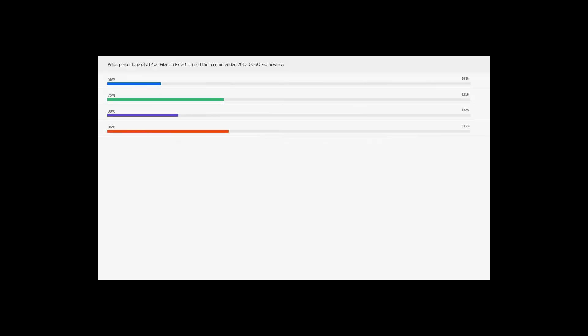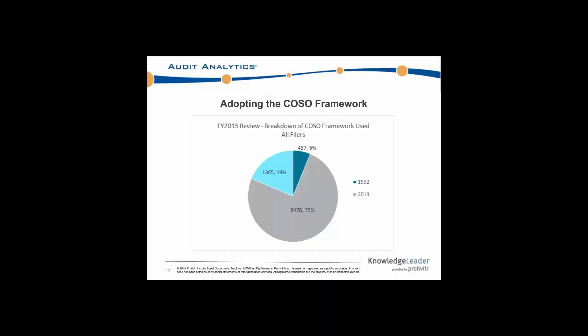Let's go ahead and click through. We see that about a third of you think 86% of all 404 filers have used the 2013 framework, followed by 75%. The actual result was 75%. So 75% of all companies in 2015 used the right framework, 6% used the 1992 framework, and then 19% of companies were undisclosed.